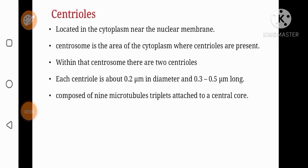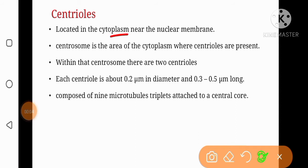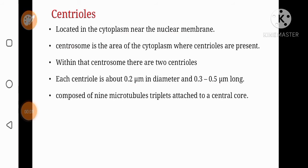Centrioles are located in the cytoplasm near the nuclear membrane. The region where centrioles are present is known as the centrosome — the region where a pair of centrioles are present. Each centriole is about 0.2 micrometers in diameter and 0.3 to 0.5 micrometers in length.